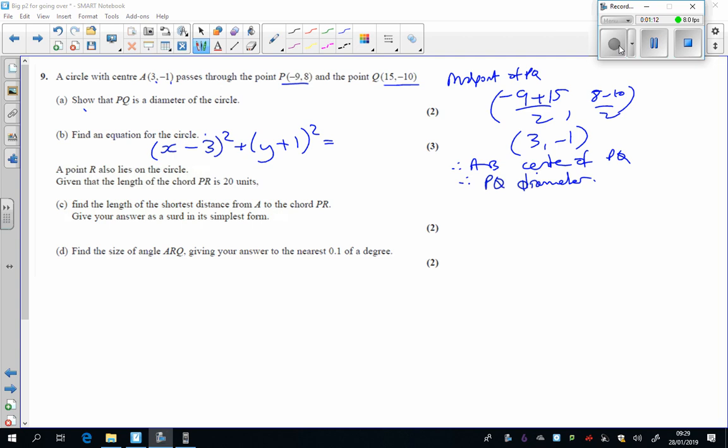equals the radius squared. So we'll work out what the radius is. We'll go from Q to here, so from 3 to 15 of course is 12, from minus 1 to minus 10 is 9, and the square root of that is the square root of 225, which is 15. So you can write 15 squared there, or 225, either would be fine.